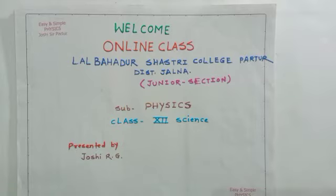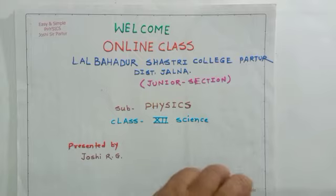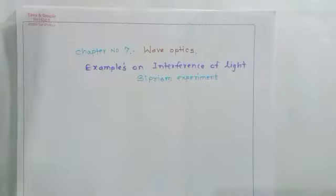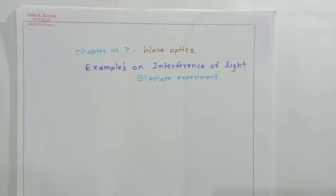Welcome students to the online class for subject physics for the 12th standard. Today we have learned chapter number 7, Wave Optics. In this chapter we have seen some examples on interference of light. These examples are on the biprism experiment. So we have seen the first example.